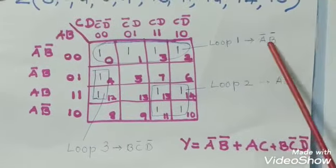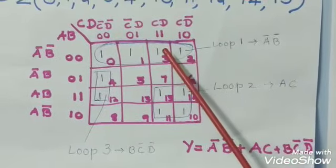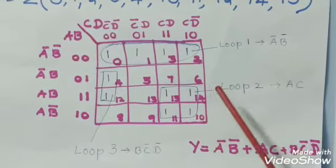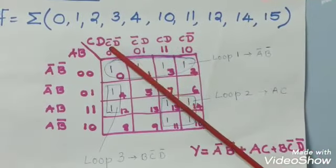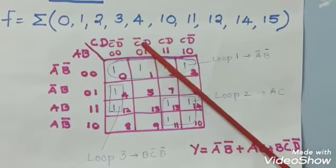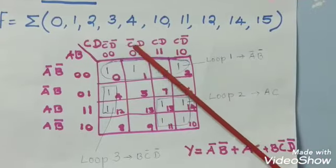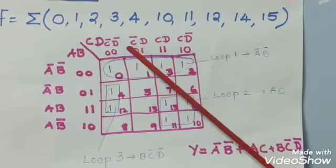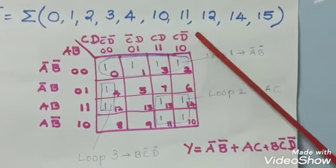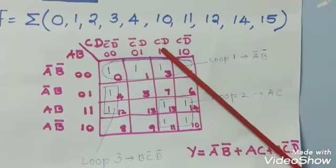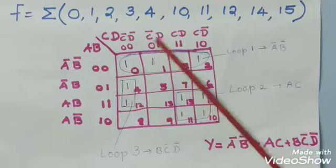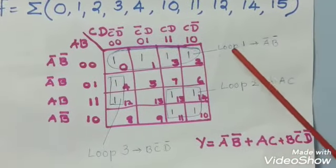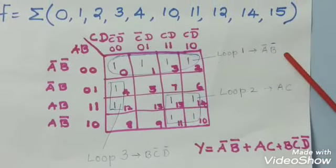Next step is writing Boolean expression for these loops. For the first loop, the value of C changes from C bar to C and D bar to D. So, you should not take the variables C and D and only take A bar and B bar. So, the expression for loop 1 is A bar, B bar.